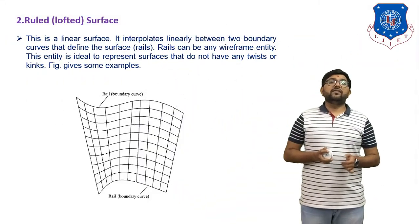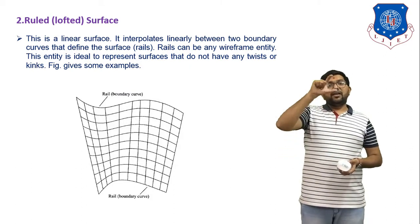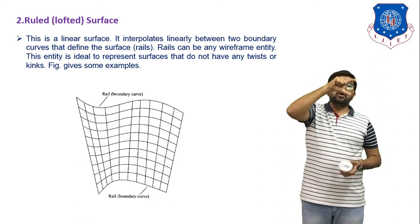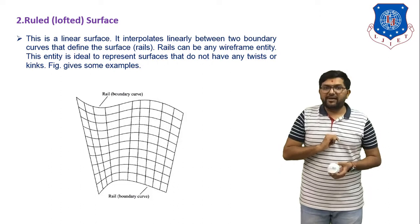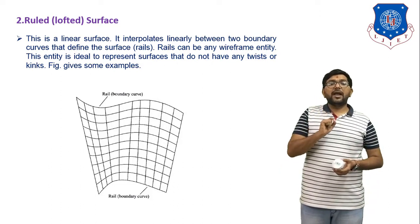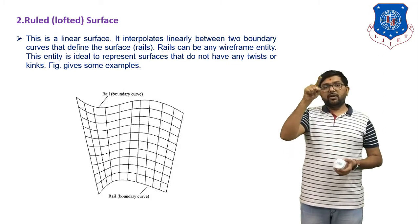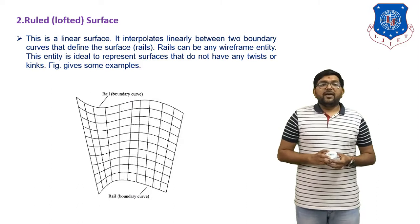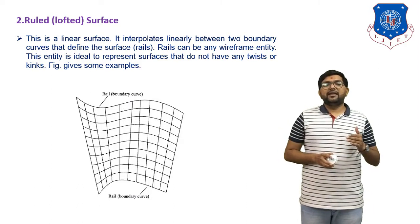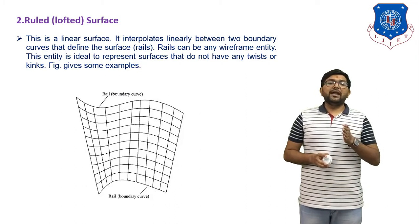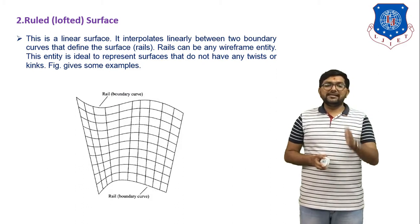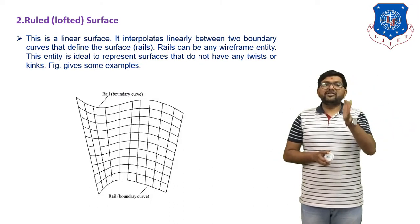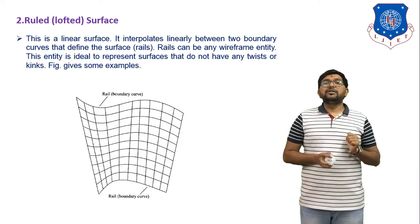The second type is ruled surfaces, also considered as a lofted surface. If we have two curves — one curve in the upper direction and a second curve in the lower direction — and we join these two curves, one surface is generated. That is a lofted surface. This is a linear surface that interpolates linearly between two boundary curves. The rail can be a wireframe entity. This entity is ideal to represent surfaces that do not have any twist or kinks. This is a good example of the lofted surface — two curves joined with straight wireframe lines. So this is the ruled surface or lofted surface.